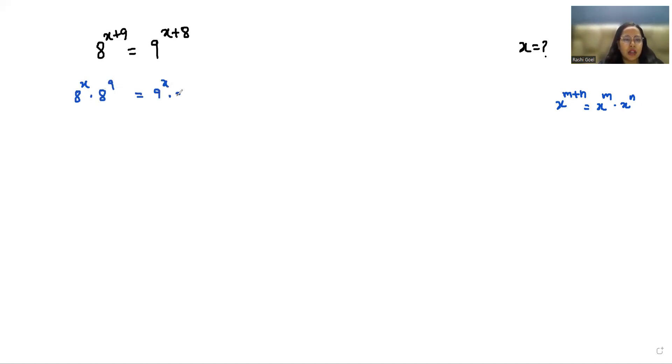This equals 9 power x times 9 power 8. Now 8 power x by 9 power x equals 9 power 8 by 8 power 9. I can write this as another exponent rule: x power m by y power m.